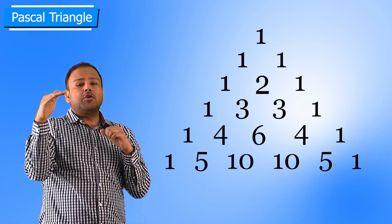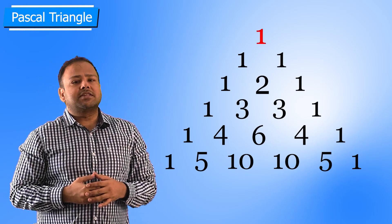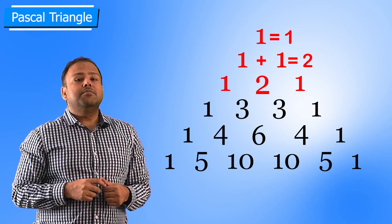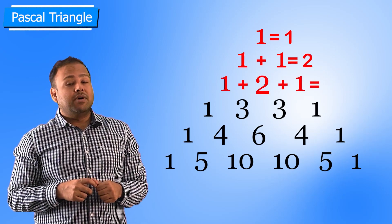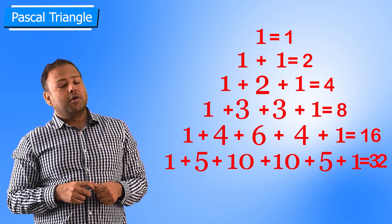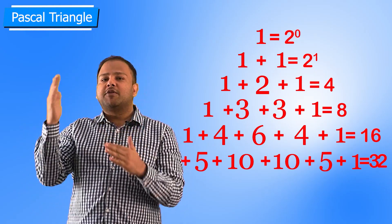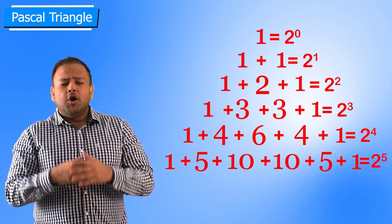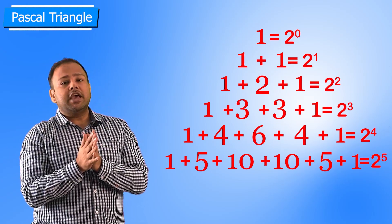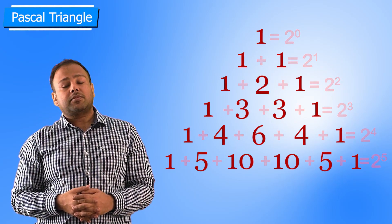If you add the numbers in each row: the first row sum is 1, the second row sum is 2, the third row sum is 1+2+1 = 4, then 8, then 16, then 32. These are 2^0, 2^1, 2^2, 2^3, 2^4 — so many patterns are there. You cannot even imagine how beautiful this triangle is.